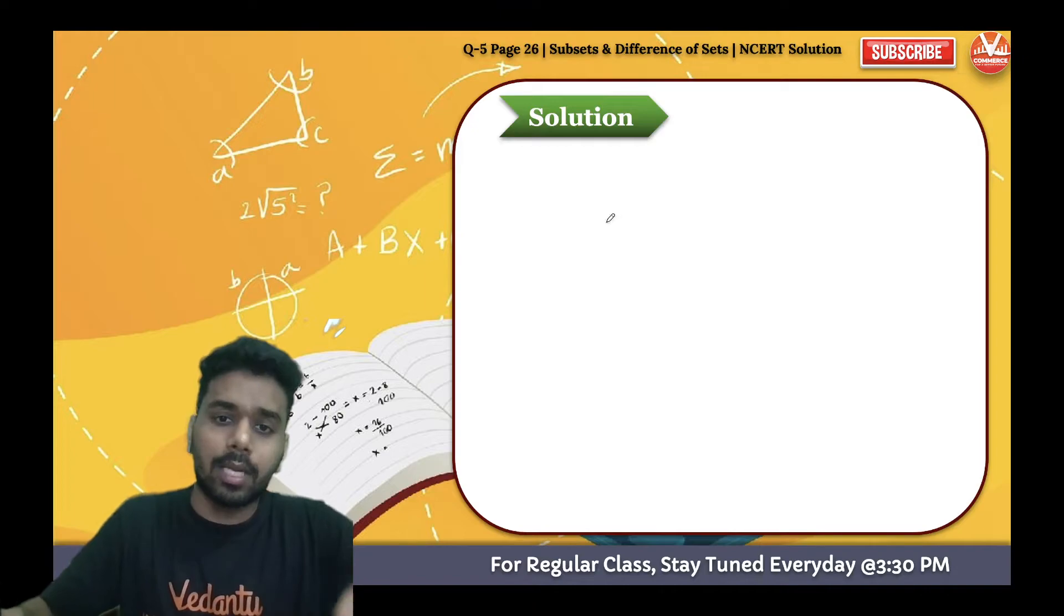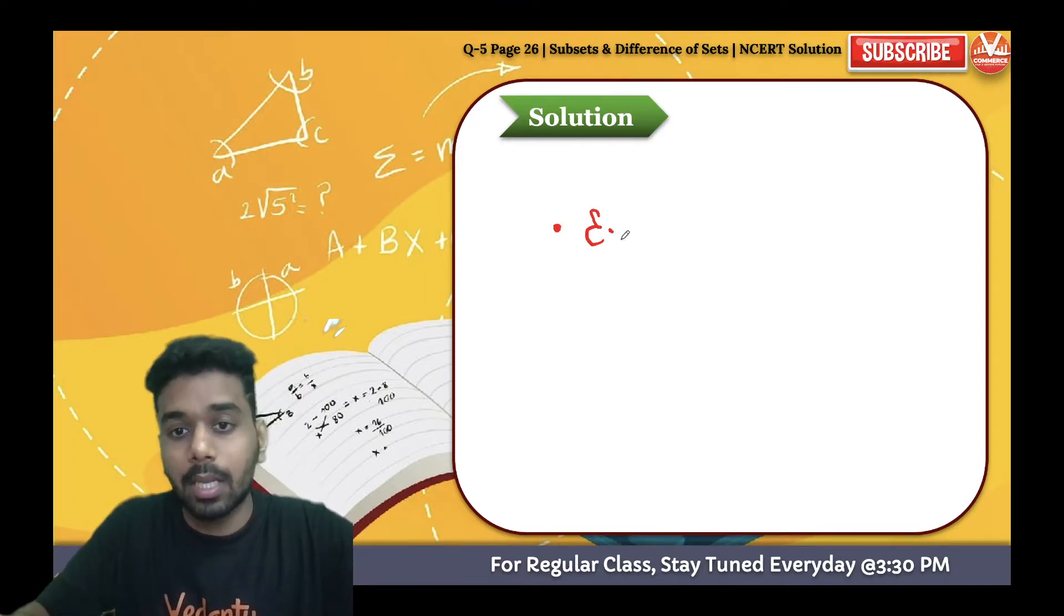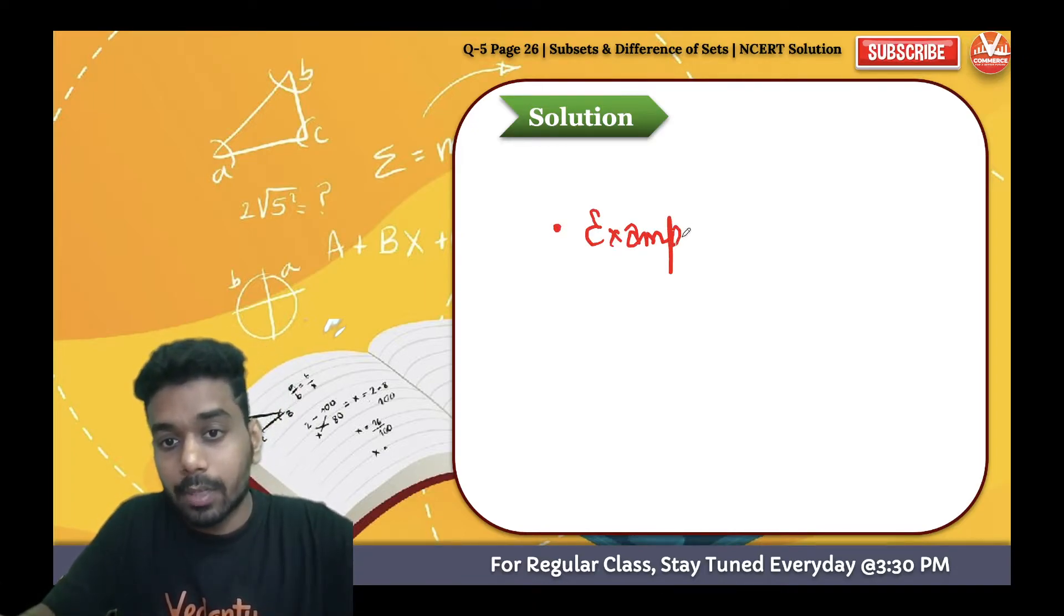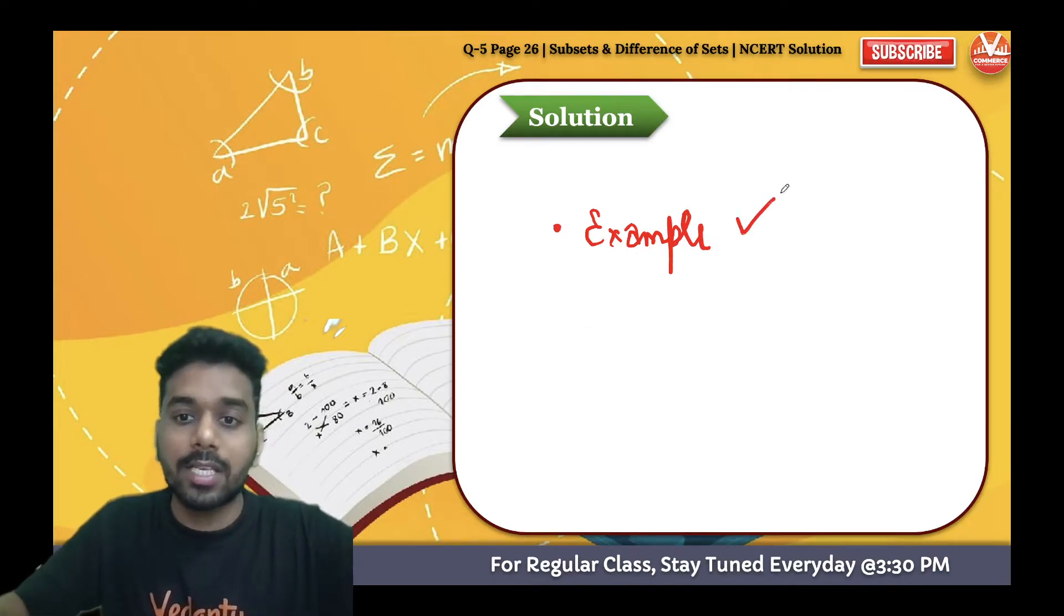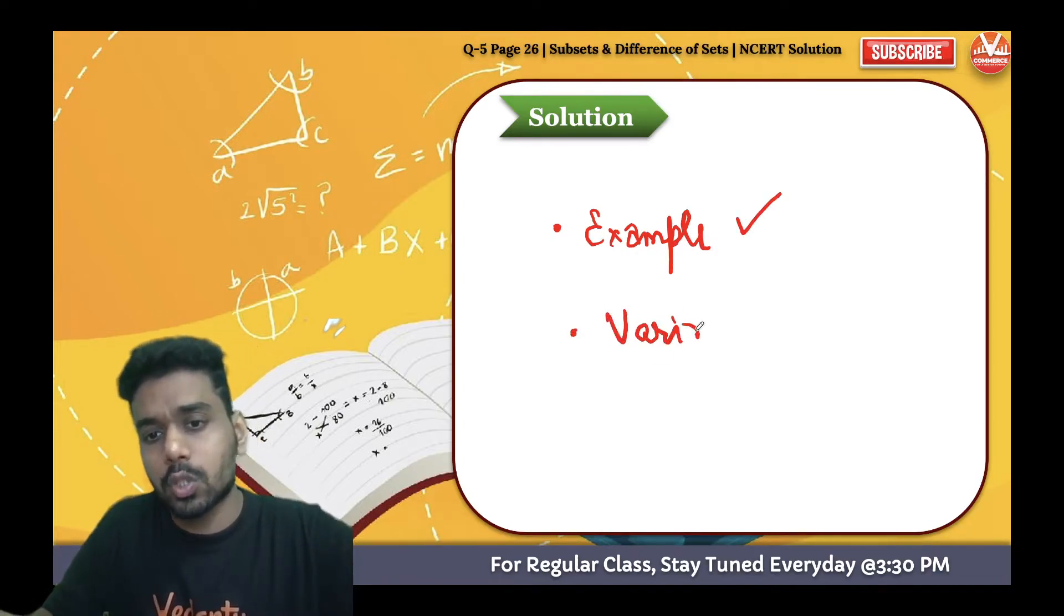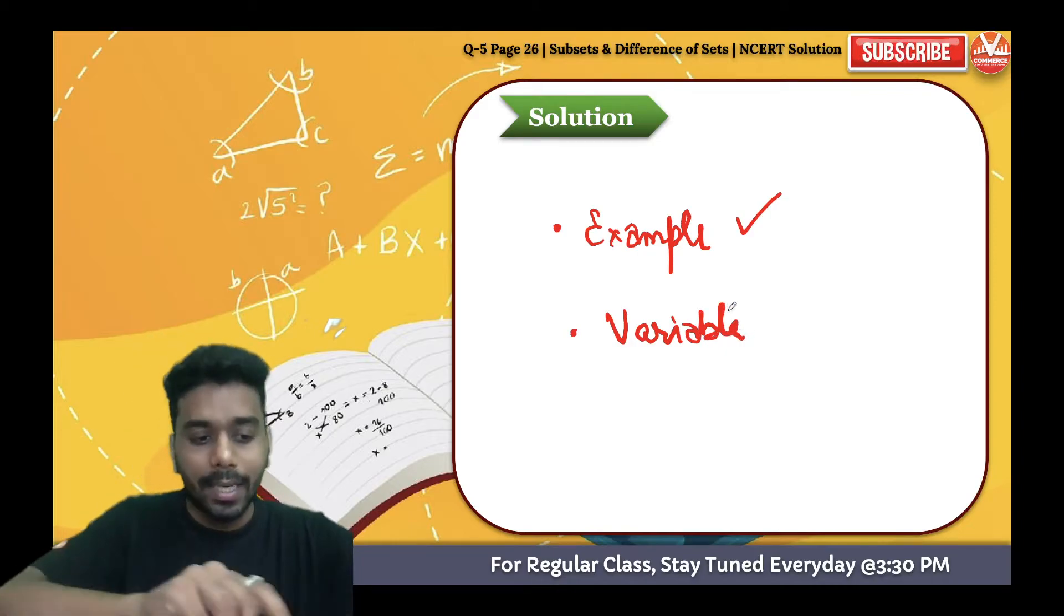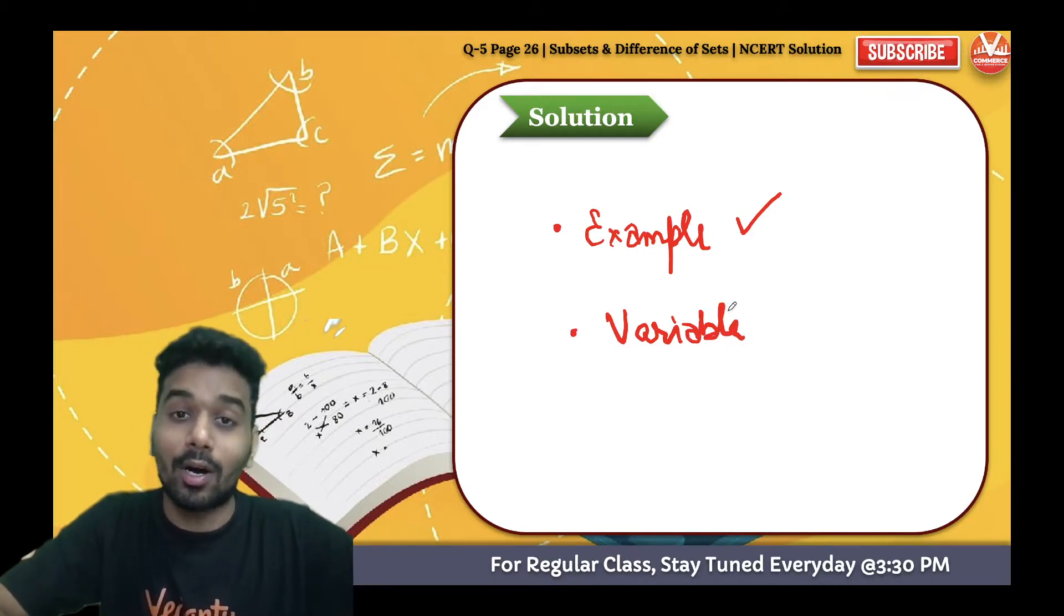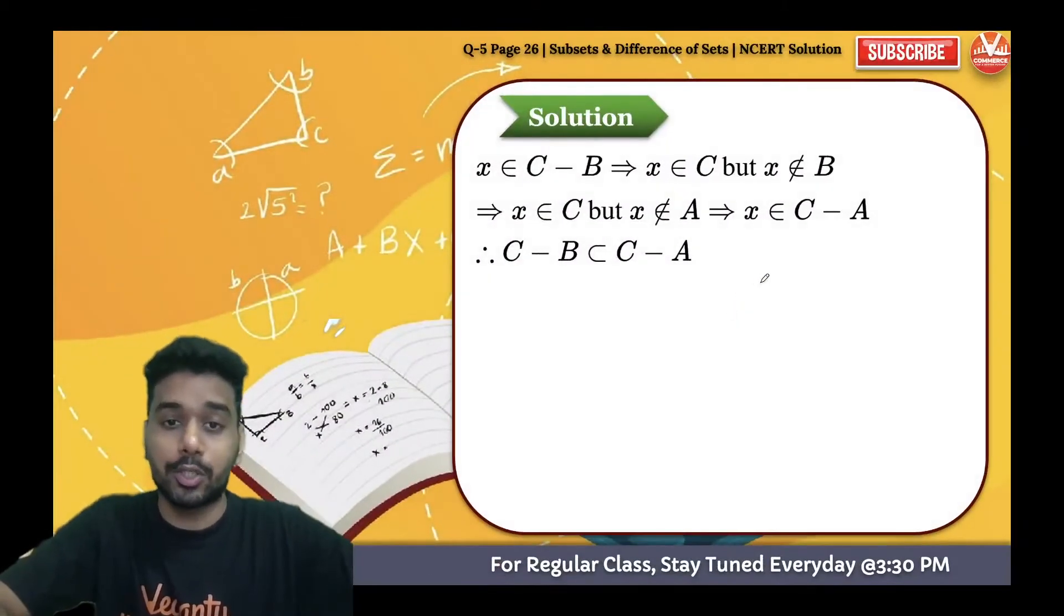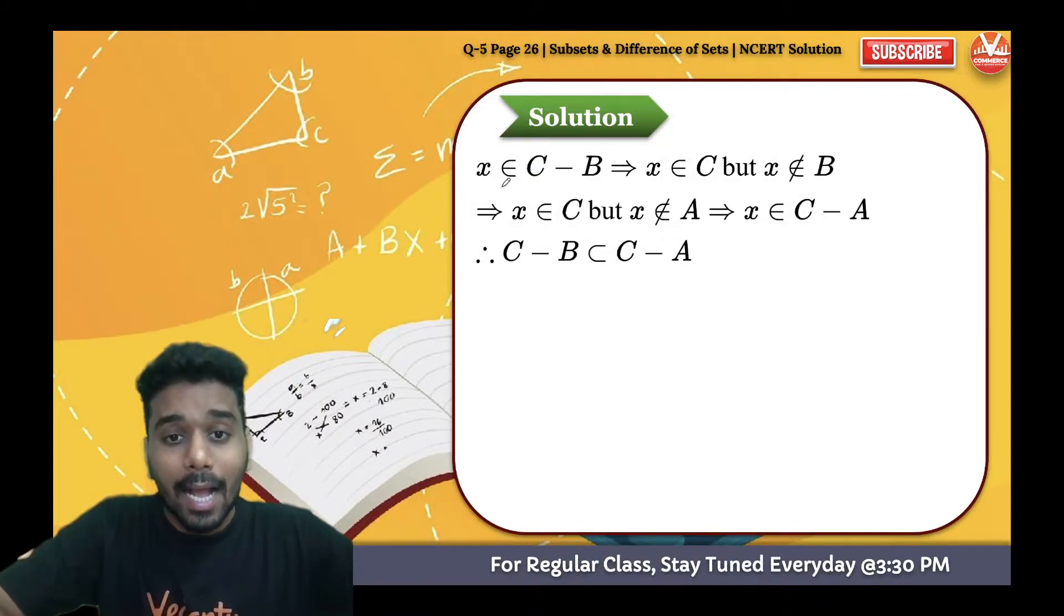But if you want to have the variable approach, there are two ways: one is through example and one is through variables. I hope the example way is very clear to you. Now we will discuss the variable way, which is also very easy.